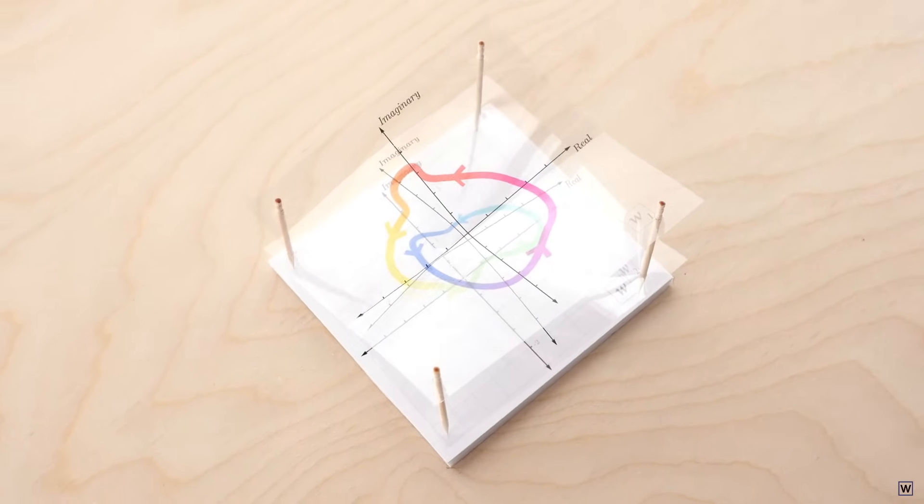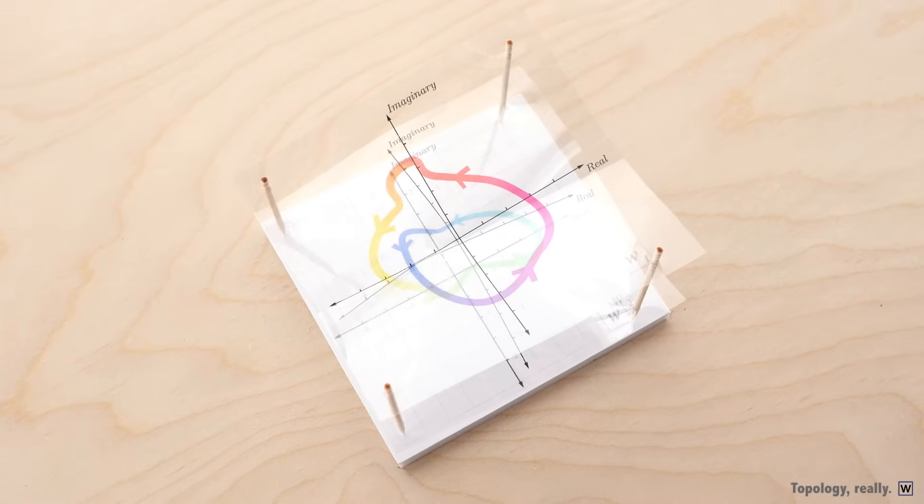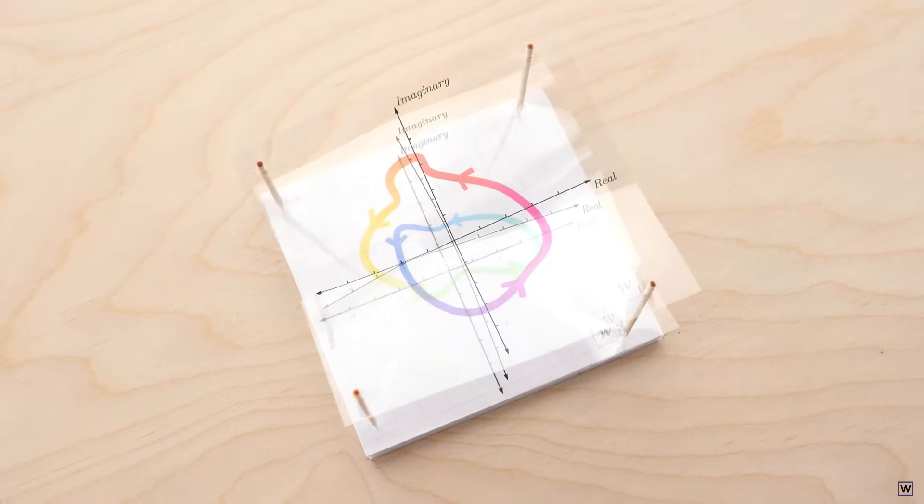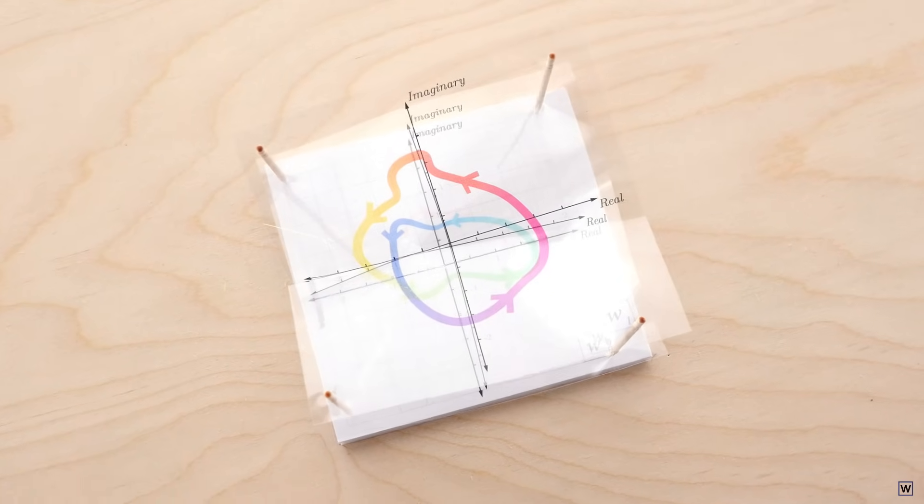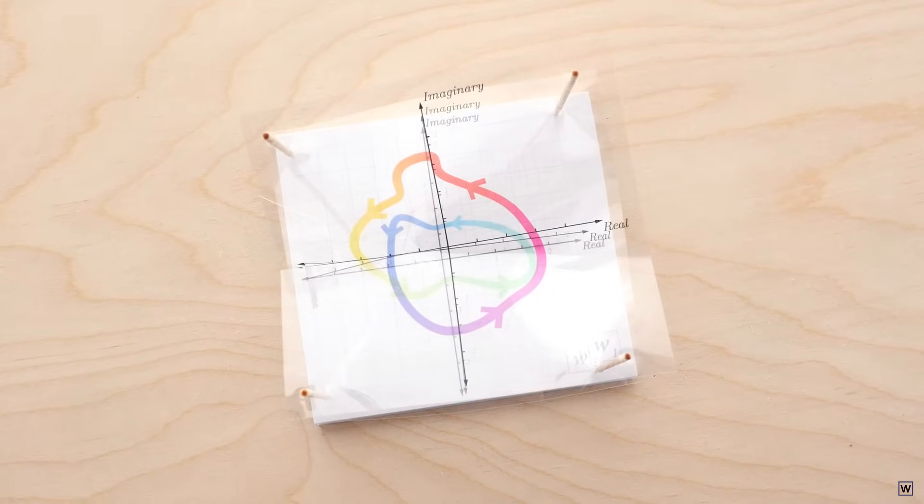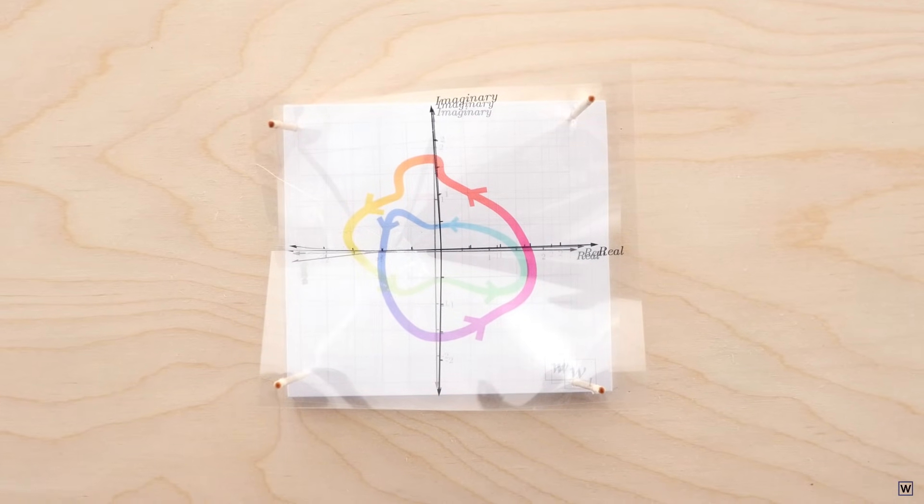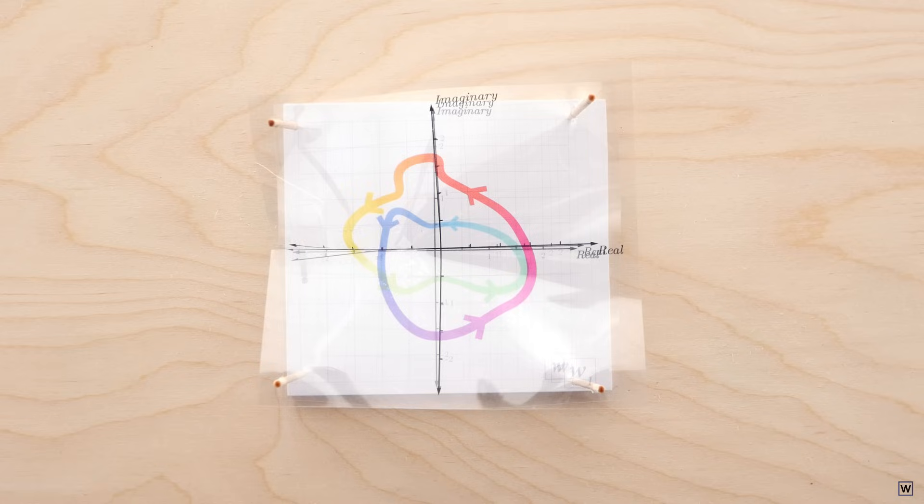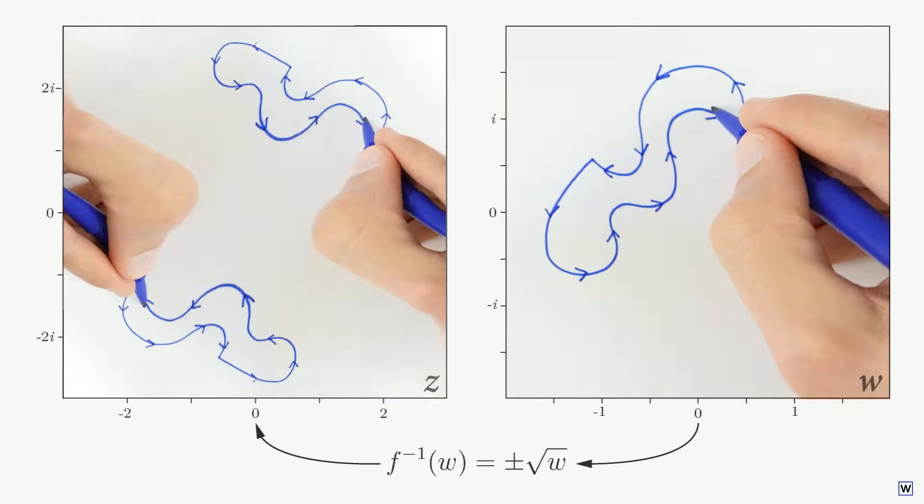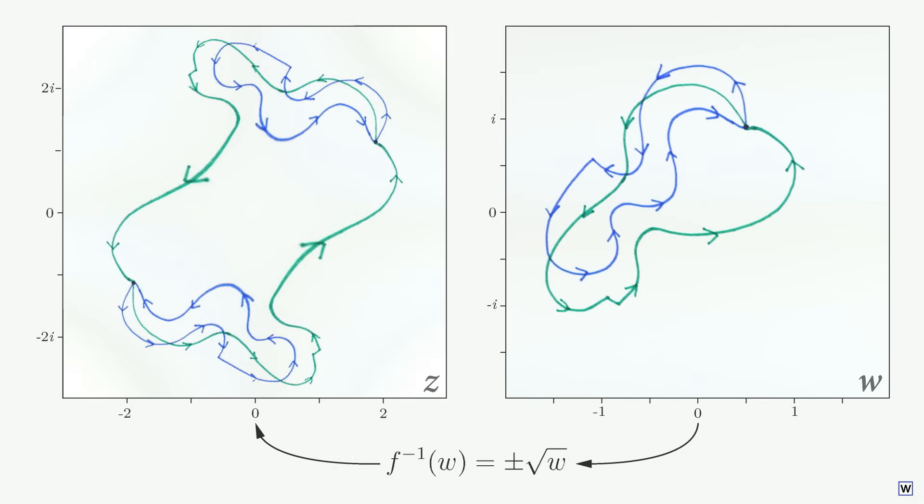What's incredible here is what the geometry of our Riemann surface is going to allow us to do. Using our Riemann surface as the input space to our multifunction, we can literally fix all of the problems we've encountered thus far. Our function will be one-to-one, continuous, and our Riemann surface will even help us elegantly explain the weird loop behavior we saw back in part 11.